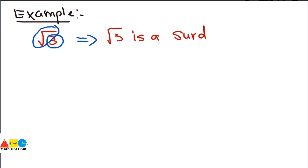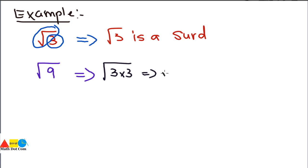Another example is square root of 9. Can you say that it is a surd? No, we cannot, because if we find its factors: 9 = 3 × 3 = 3 squared. When the square is cancelled out, we get 3. There is no radical sign remaining, and for a surd a radical sign is a must. So we can say that square root of 9 is not a surd.